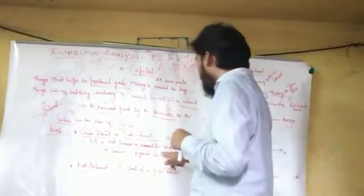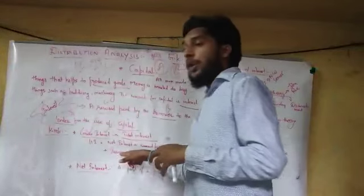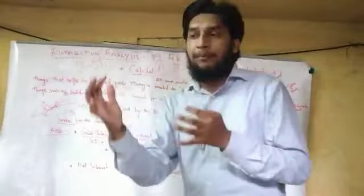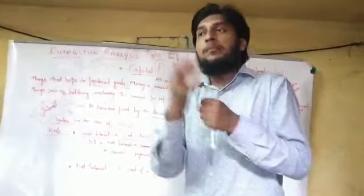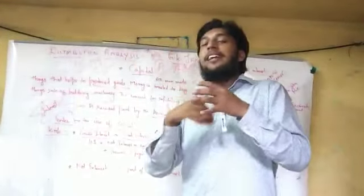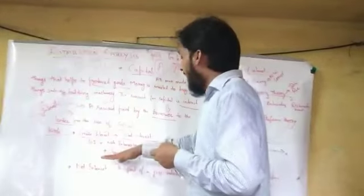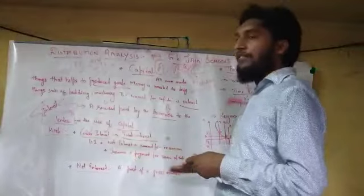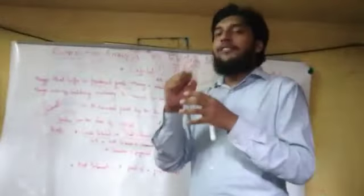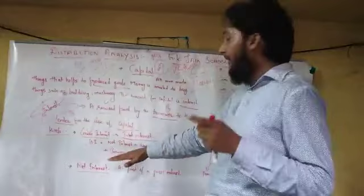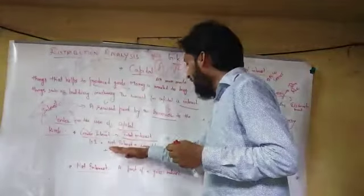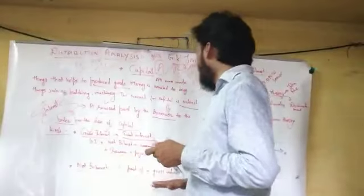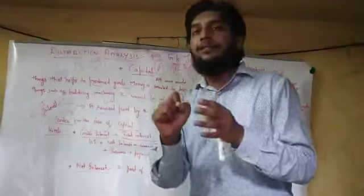Then we have insurance: if anything happens to the product — for example, if a machine is suddenly damaged due to depreciation — the money paid for that is insurance. Plus there is the payment for the service of the debt. So: Gross Interest = Net Interest + Reward for Inconvenience + Insurance + Payment for Service of Debt.